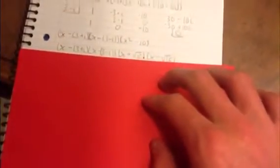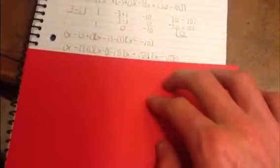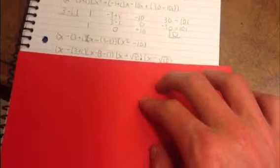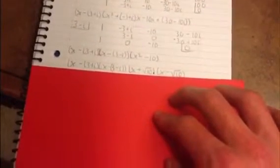And after you set the equation equal to 0 and solve for x, you get your zeros.